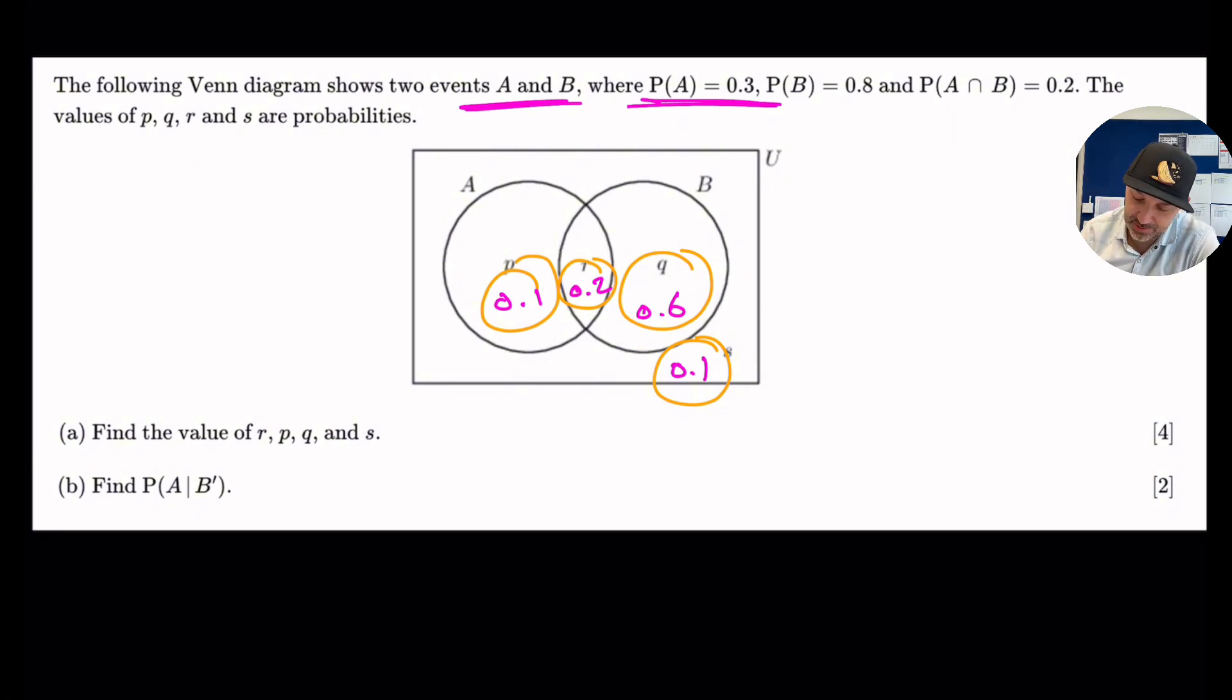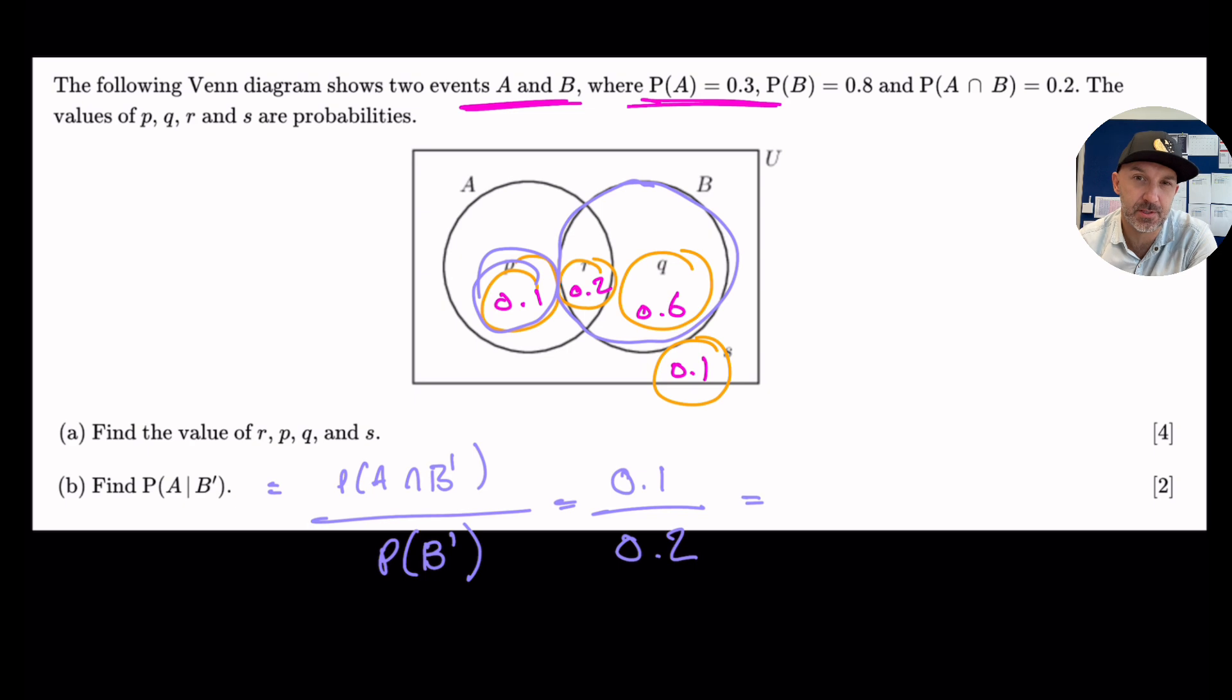Find the probability of A and not B. So we've got the same thing here where we have the probability of A and not B over the probability of not B. So it's similar to the first question. The probability of not B is 0.1 plus 0.1. So what I'm doing here is I'm looking at not B. So here's B. So we don't want anything inside B. So not B is 0.1 and 0.1. So not B is 0.2. And the probability of A and not B. Okay. So not B and A is 0.1. Okay. So what I'm doing here is I'm timesing top and bottom by 10, leaving it as a fraction is a half.